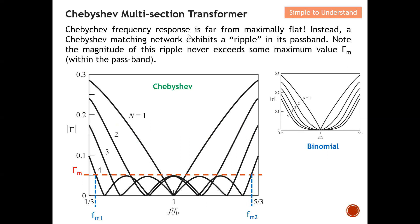Let's look at the Chebyshev frequency response. As I mentioned, it is not flat — you can see from this diagram that at the passband there is ripple, so it is not a flat response. It exhibits a ripple in its passband. However, please note that the magnitude of this ripple never exceeds some maximum value — the maximum reflection coefficient Γ_m. The ripple level never exceeds this maximum, and hence you can achieve higher bandwidth.